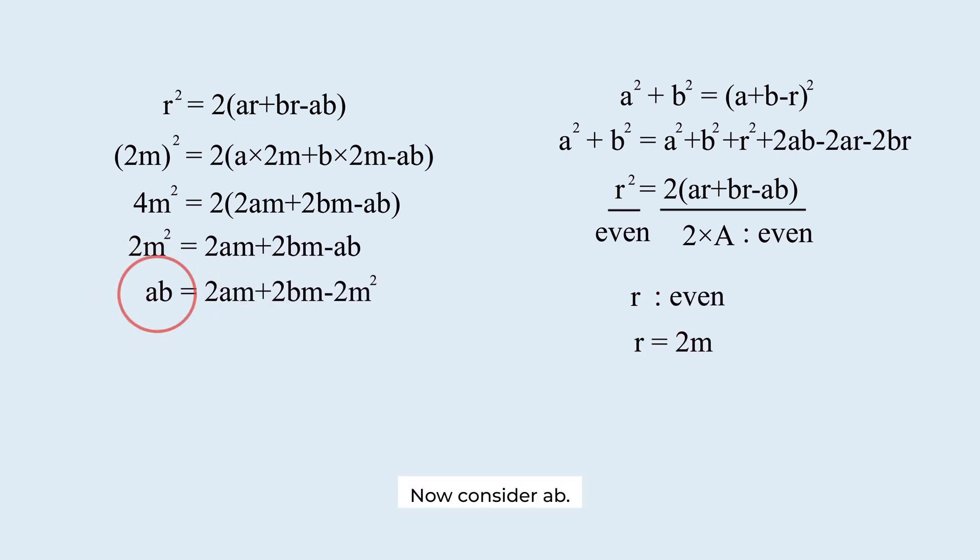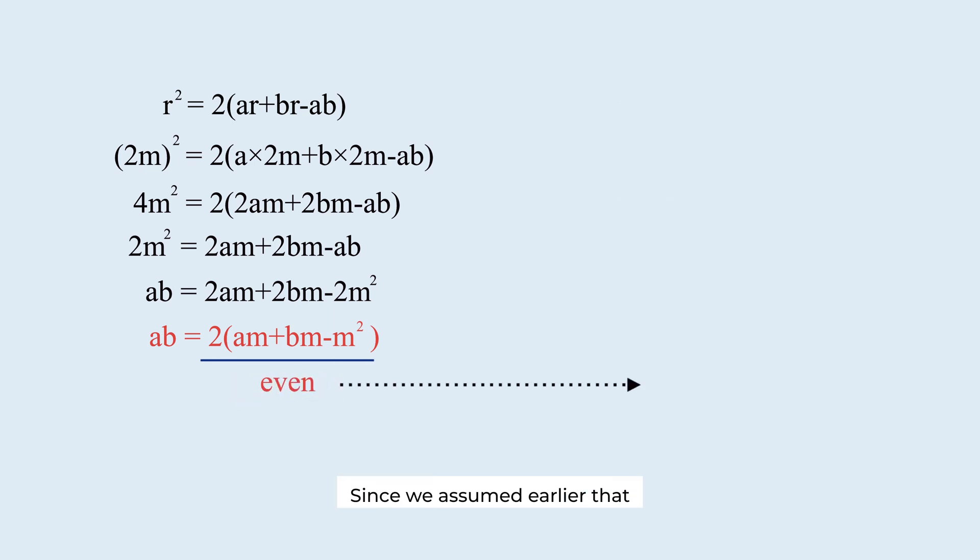Now, consider ab. ab has two as a factor. ab is even. Since we assumed earlier that b is odd, this means that a must be even.